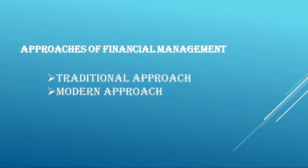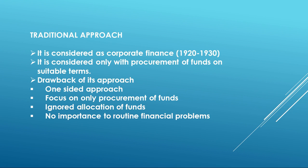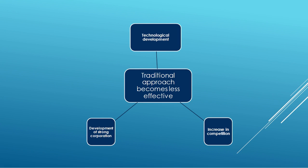Finally, approaches of financial management can be classified into two: traditional approach and modern approach. In the 20th century, financial management was considered as corporate finance. Under the traditional approach, financial management focuses only on procurement of funds but ignores the effective utilization of funds — that is why it is called a one-sided approach. By the end of the 1950s, the traditional approach became less effective due to technological development, the growth of strong corporations, and increased competition. It became essential for management to make effective utilization of economic resources in the changing business environment. That is why the modern approach was developed.